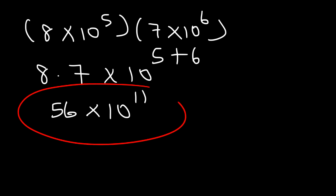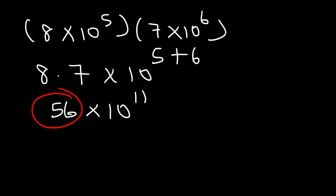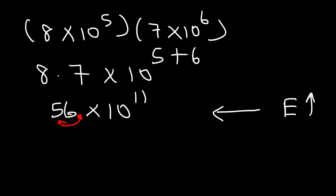Now this number is not in proper scientific notation. We need this number to be more than 1 but less than 10. So we need to move the decimal one unit to the left. If we decrease the number 56 to 5.6, we need to increase the exponent so that the number remains the same. Anytime you move the decimal point to the left, the exponent should increase by one. So this is going to be 5.6 times 10 to the 12th.